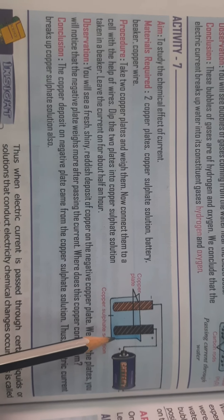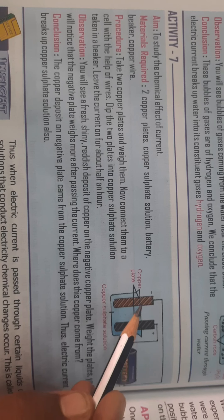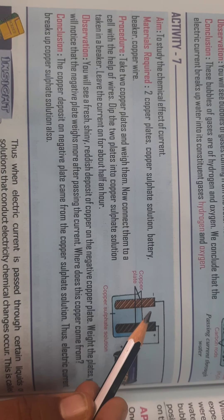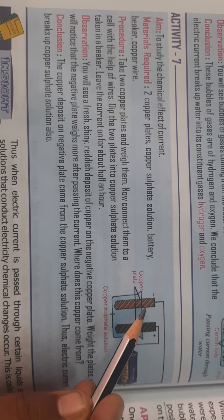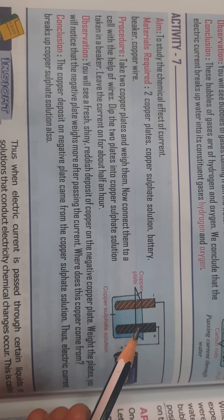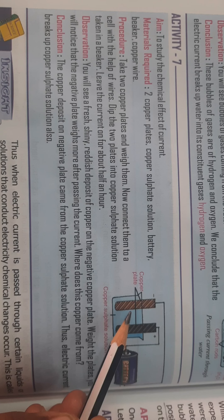After half an hour, you will see that there is a reddish deposit of copper on the negative copper plate. There is a reddish brown deposit, and when you weigh the plate, you will see that the weight has increased.